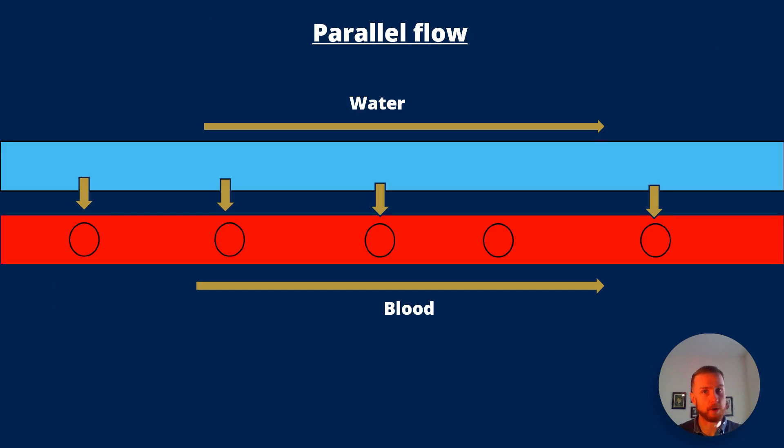Well if it was parallel flow not countercurrent flow this is what we'd have. We'd have water flowing in one direction and the blood flowing in the same direction. So let's do this mathematically. Let's imagine the water had 10 arbitrary units of oxygen and the blood had a relative concentration of oxygen of zero. We'd have 10 in the water and that would go five and five.